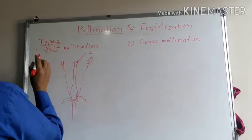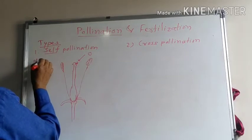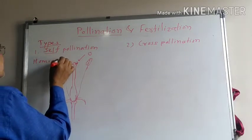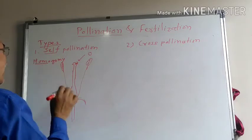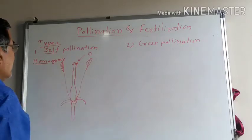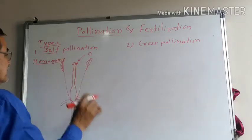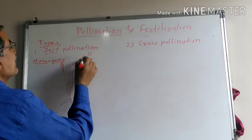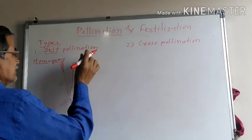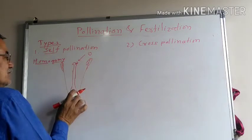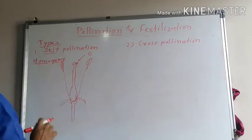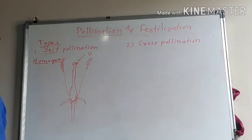Self-pollination is also known as homogamy. 'Homo' means same, 'gamete' means gamete — that is the male gamete and female gamete. The male gamete produces the pollen grains; the female gamete produces the gynoecium. That is known as homogamy.